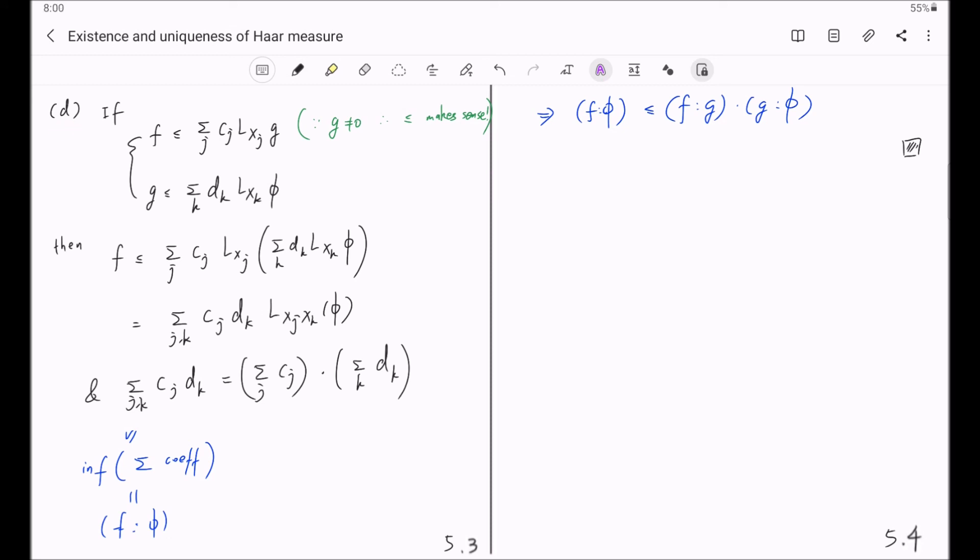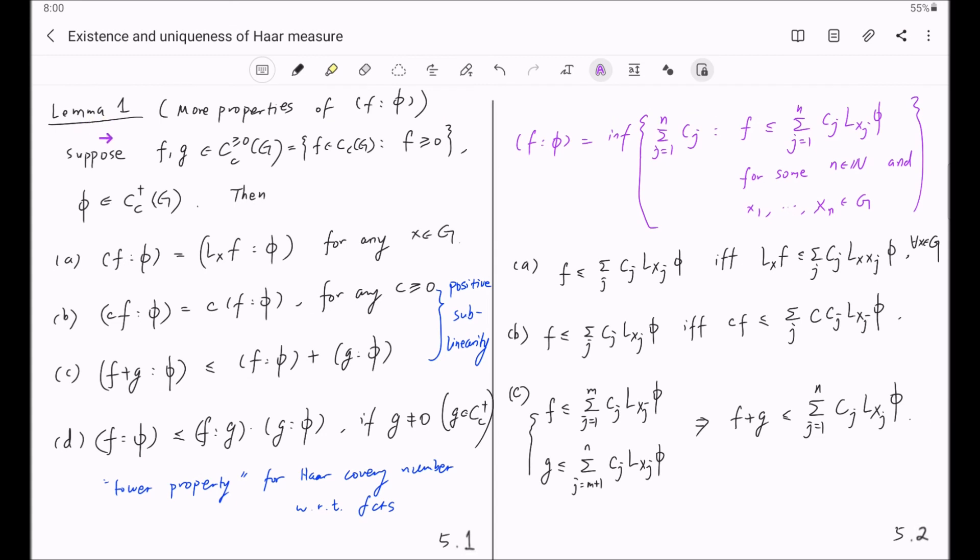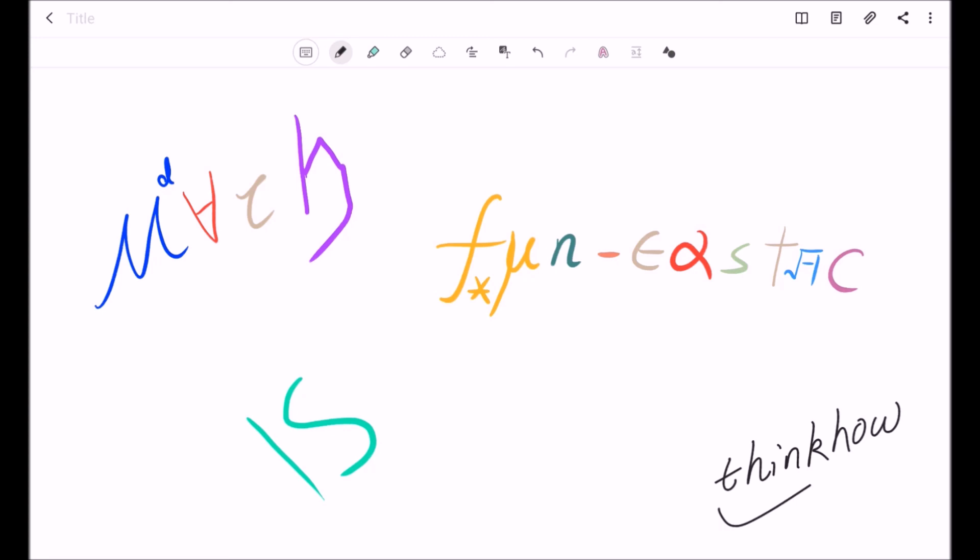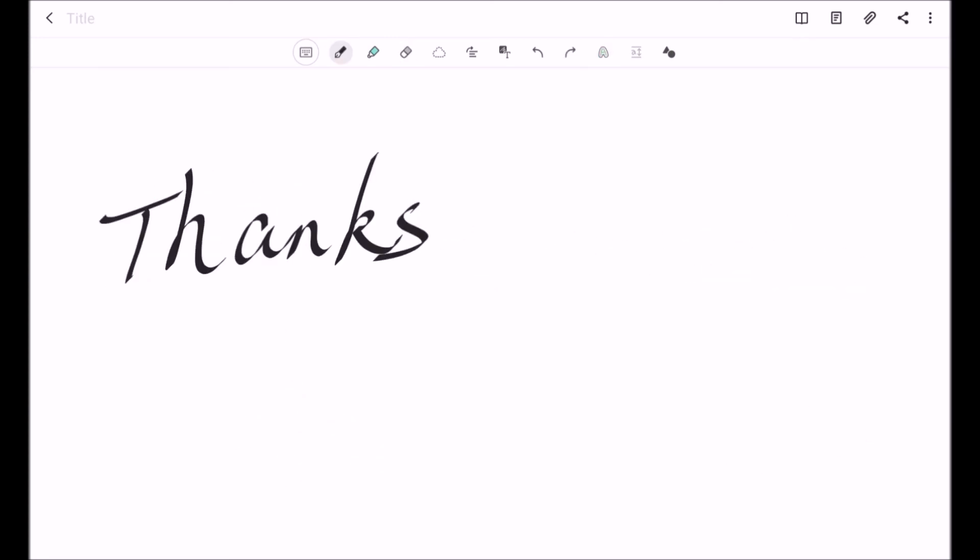And finishes the proof of our Lemma 1 on properties of F column phi, the Haar covering number with respect to functions.